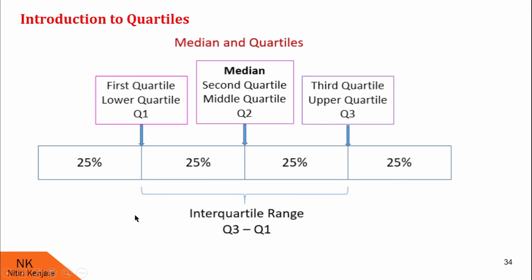To find quartiles, first identify the median of the data — that median is quartile two. Then find quartile one, which is the median of the lower half of the data. Then find quartile three, which is the median of the upper half of the data. Finally, you can find the interquartile range by simply subtracting Q1 from Q3. Let me help you understand this more clearly with an example.